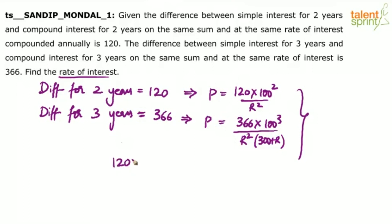I can say 120 into 100 squared by R squared equals to 366 into 100 cubed by R squared into 300 plus R. Simplify. What happens? R squared gets cancelled. Right?